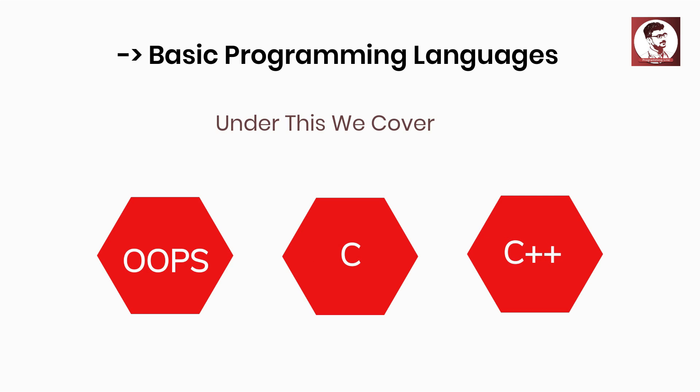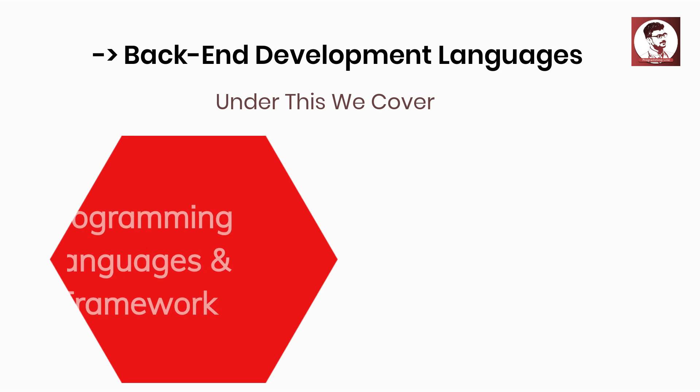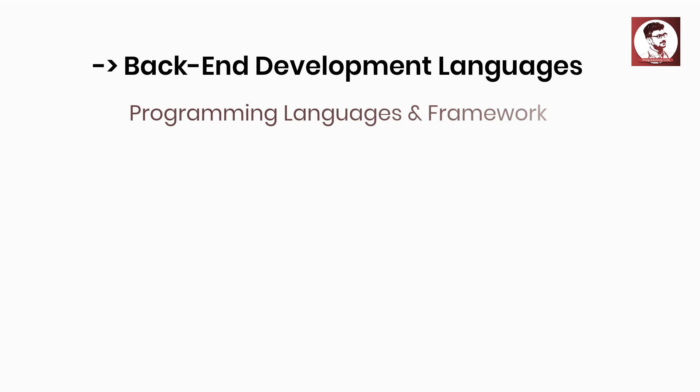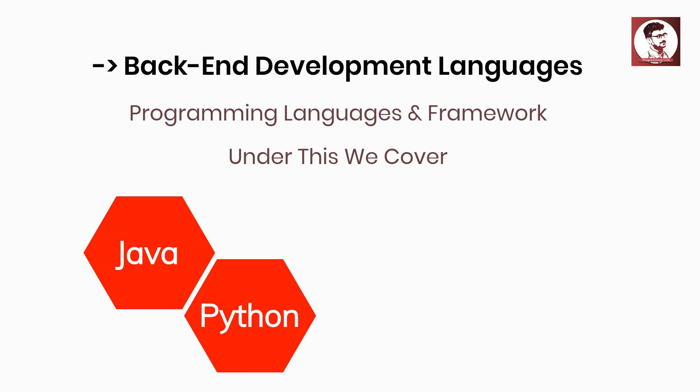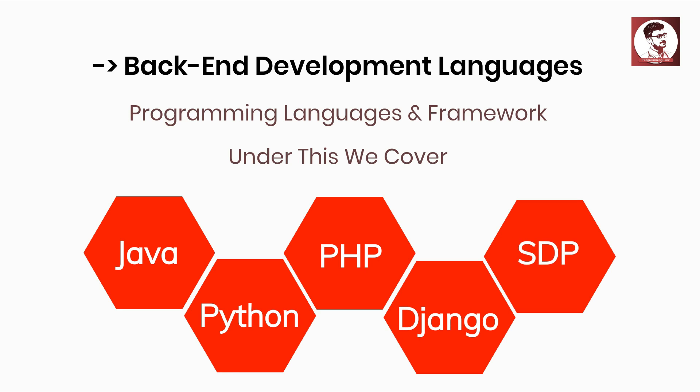We have a software field as a basement, and in the interview we have three things. When we develop software, back-end and front-end, we have two issues. Back-end development languages, programming languages and frameworks, and database management are very important. Back-end development: the first category is programming languages and frameworks — Java, Python, PHP, Django. We cover four things. The first thing is SDP, Software Design Patterns. If you create a software field, the software design patterns play a major role. That's what we cover in this course.